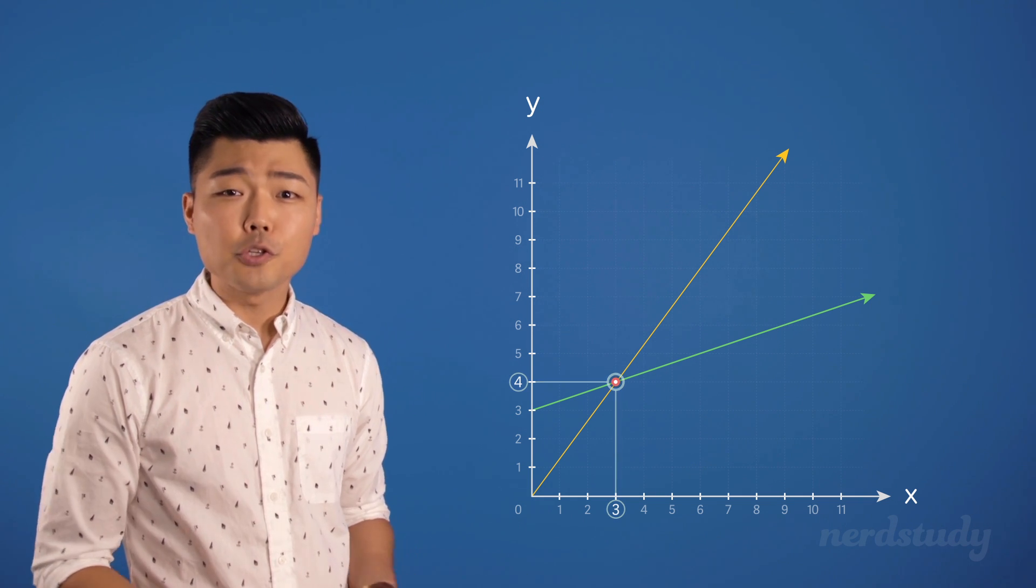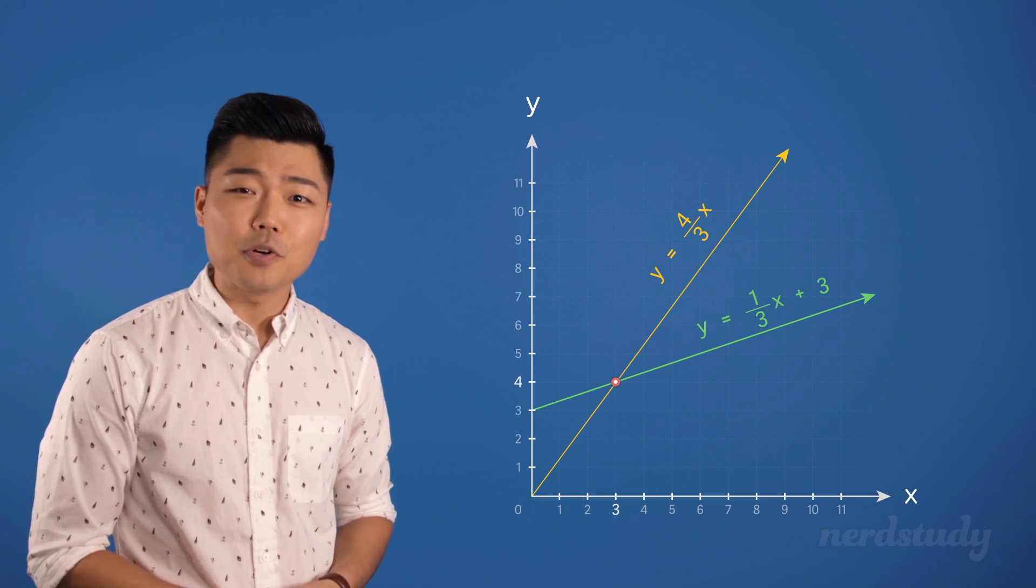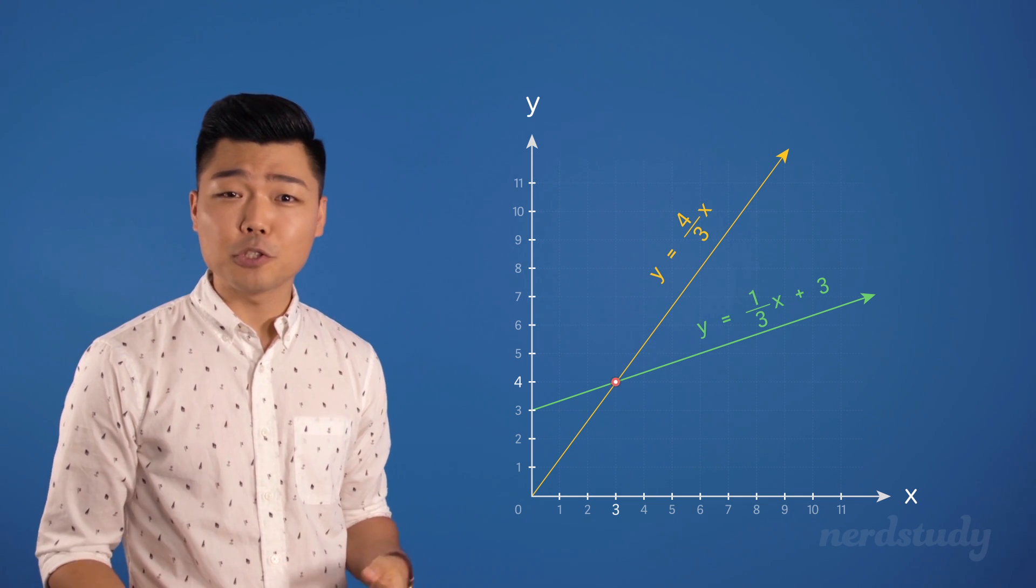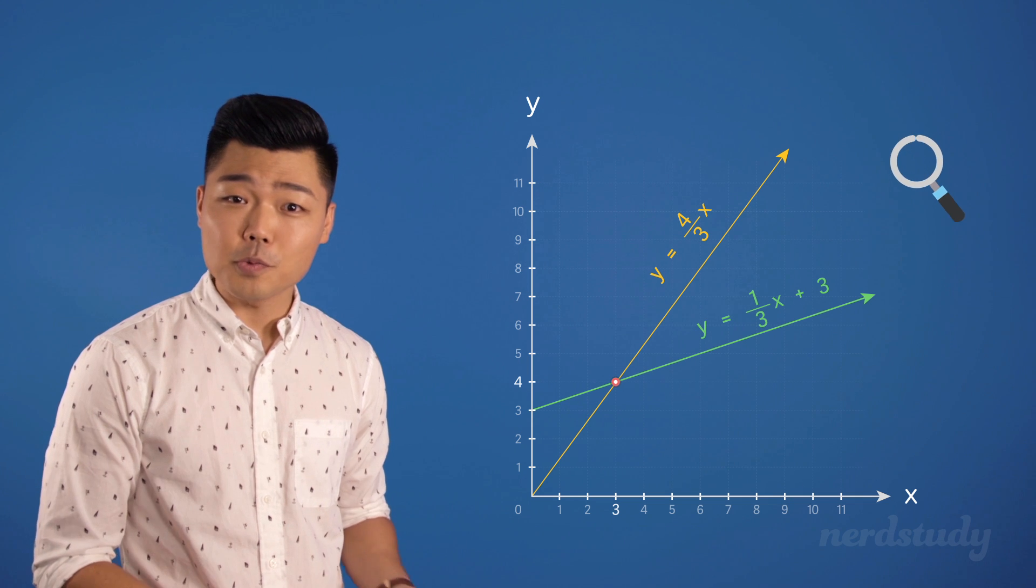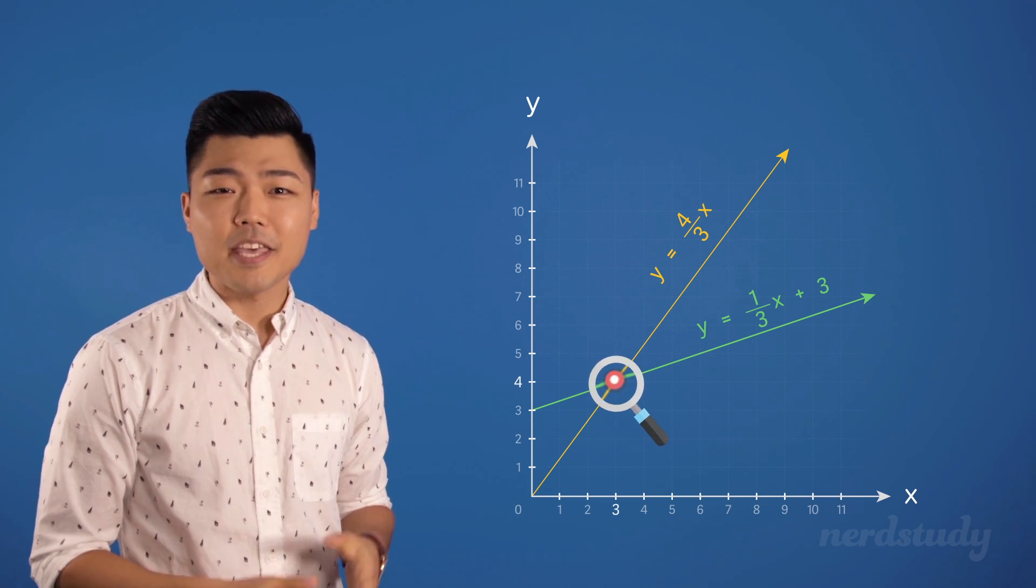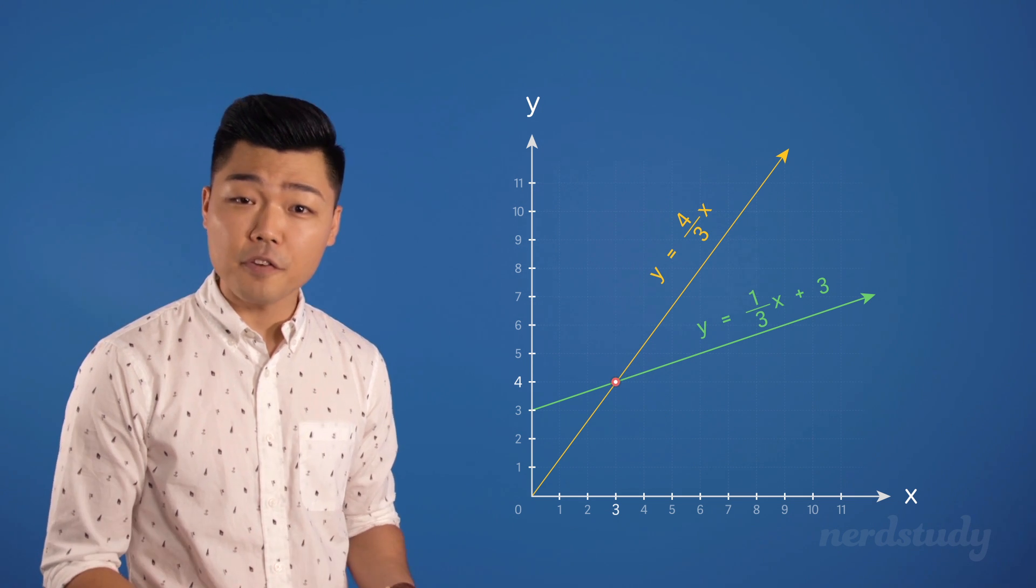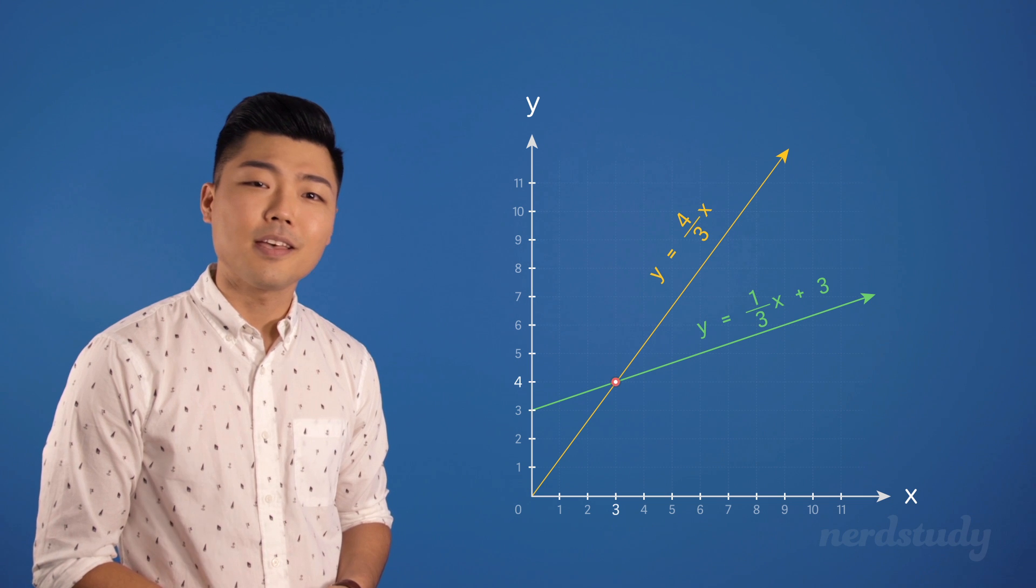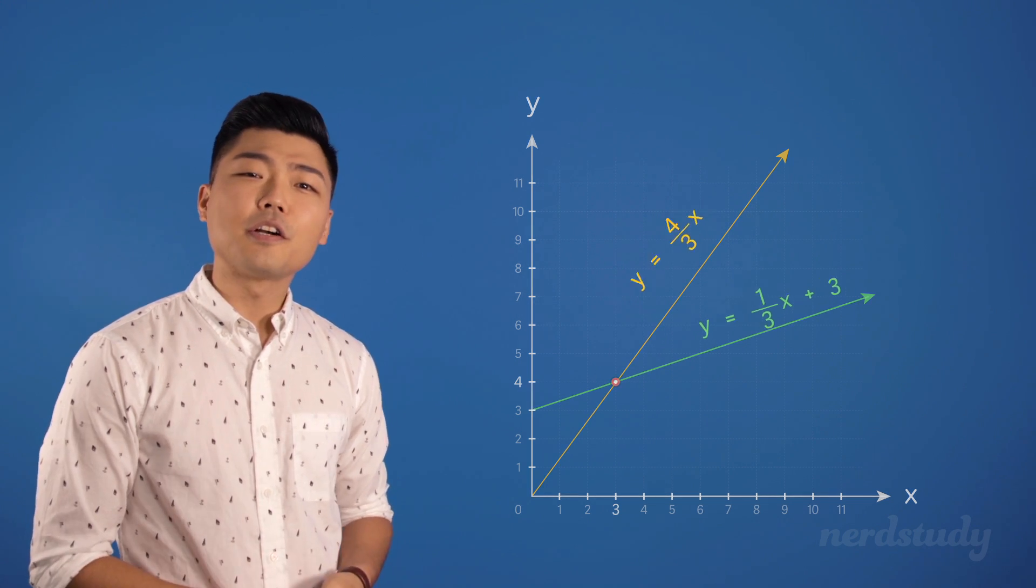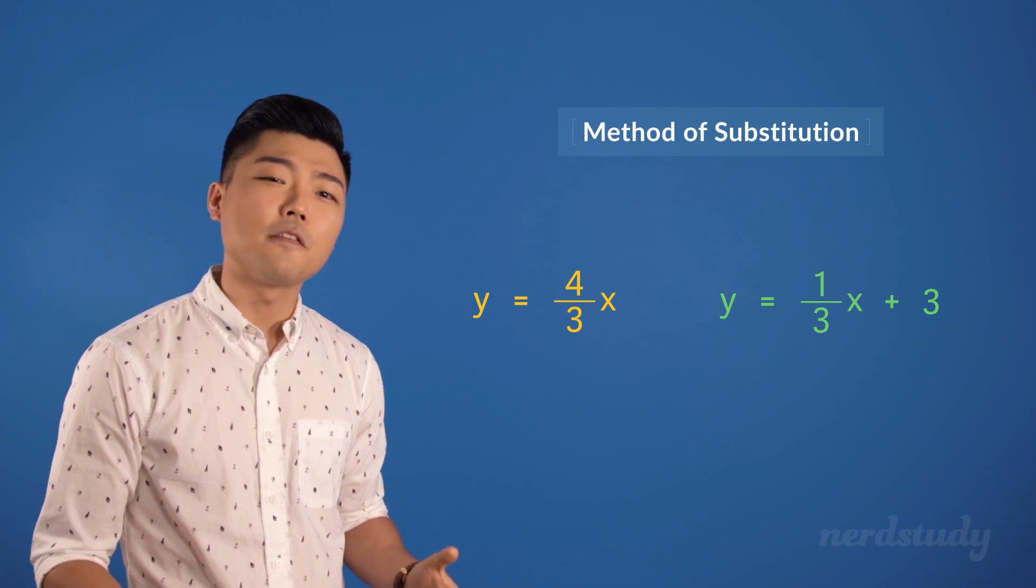Of course, you'll usually be given equations instead, which makes it much more difficult. And while you might be able to draw the graph and then just eyeball the point of intersection, it can be a bit inaccurate to rely on drawing the graph perfectly by hand. Instead, we're going to learn to solve for the linear systems through the method of substitution.